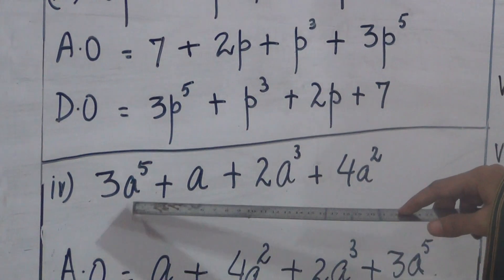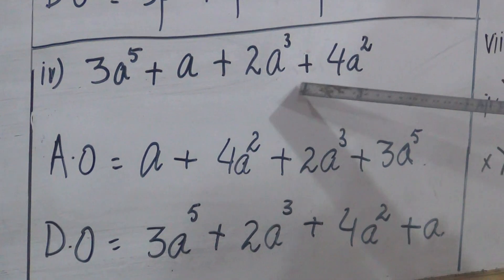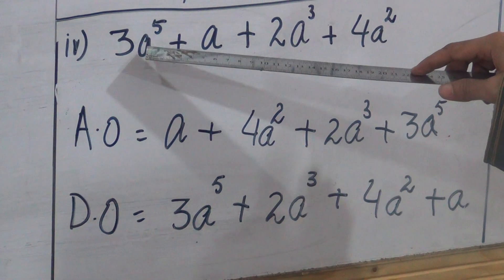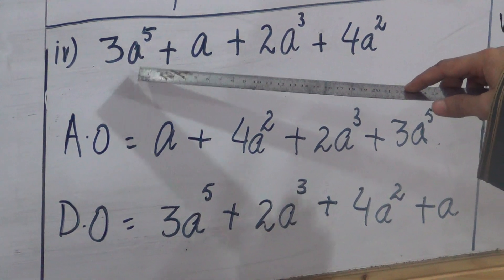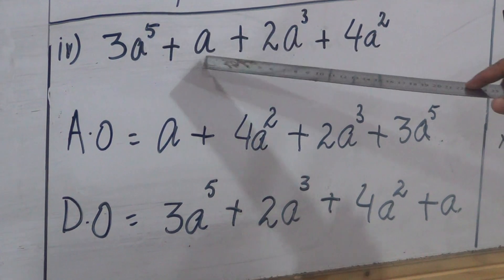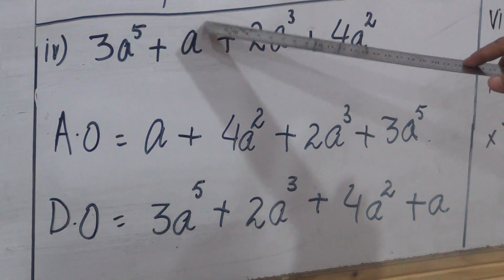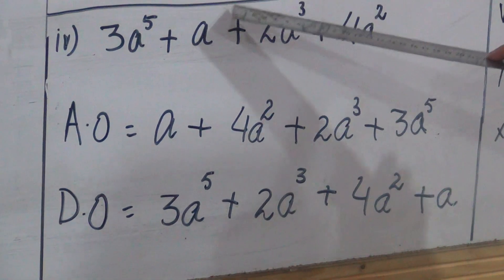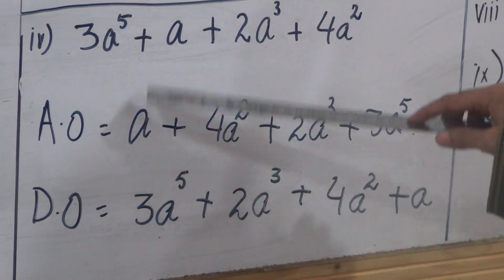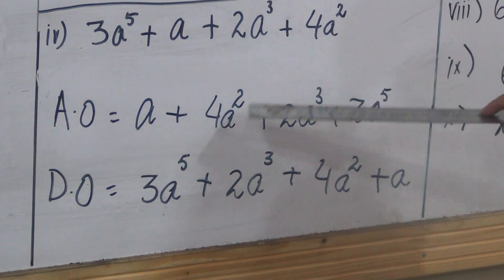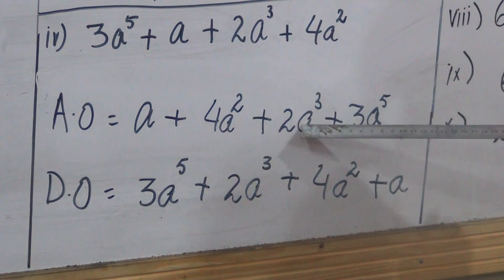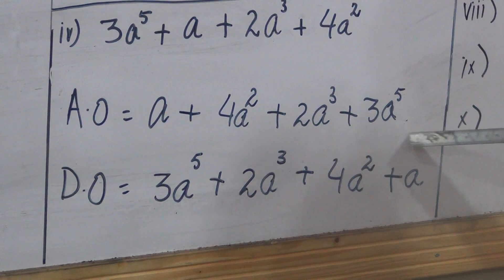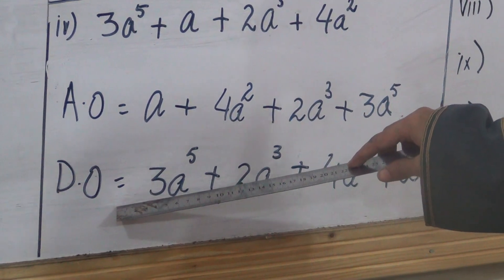The fourth expression is 3a raised to the power 5 plus a plus 2a cubed plus 4a squared. We have to arrange this expression with respect to variable a. a is the variable. The power of a is 5, then a has a hidden power 1, then power 3, then power 2. In ascending order: a, then plus 4a squared, then plus 2a cubed, then plus 3a raised to the power 5. In descending order, we go in the opposite direction.